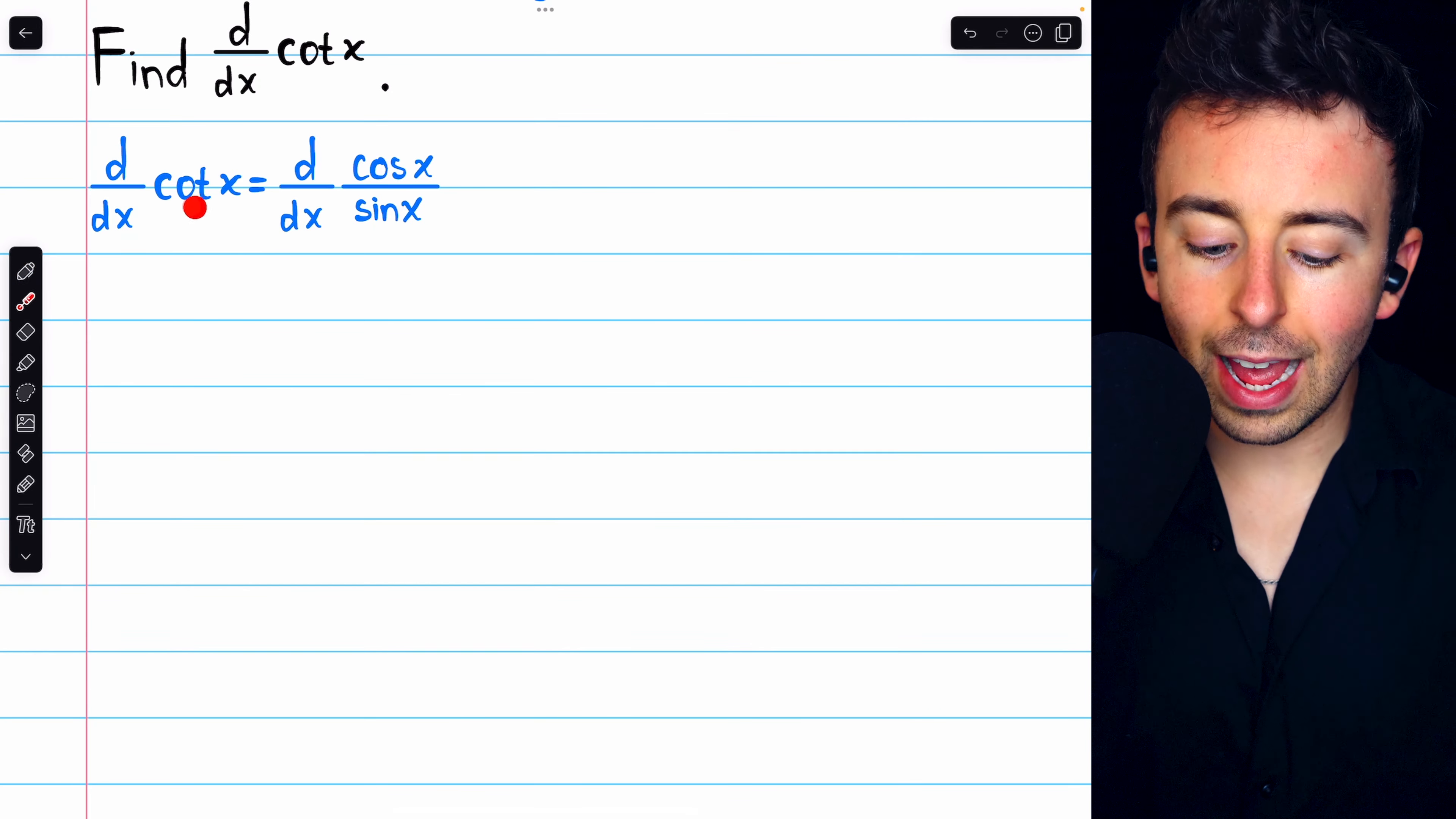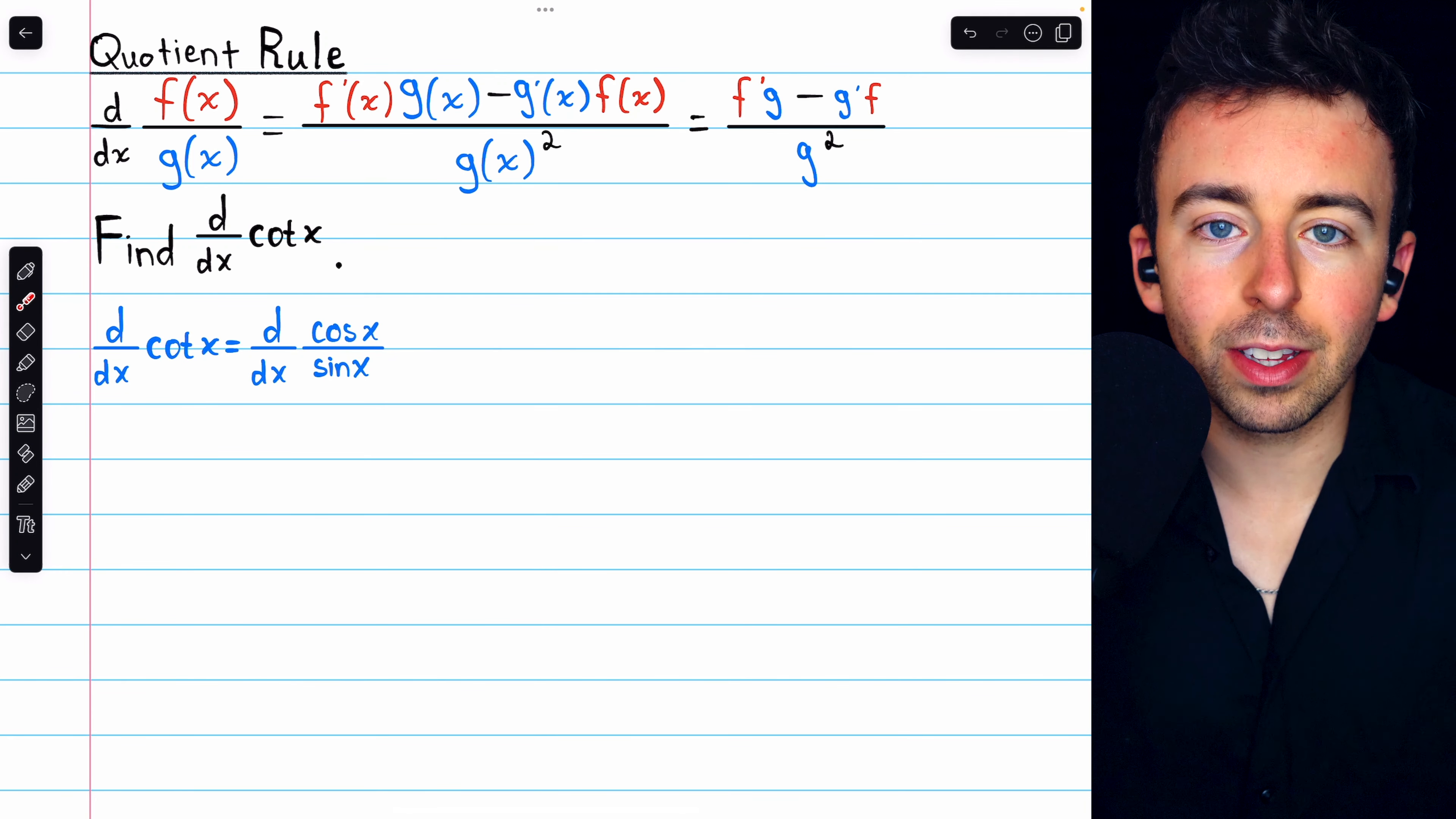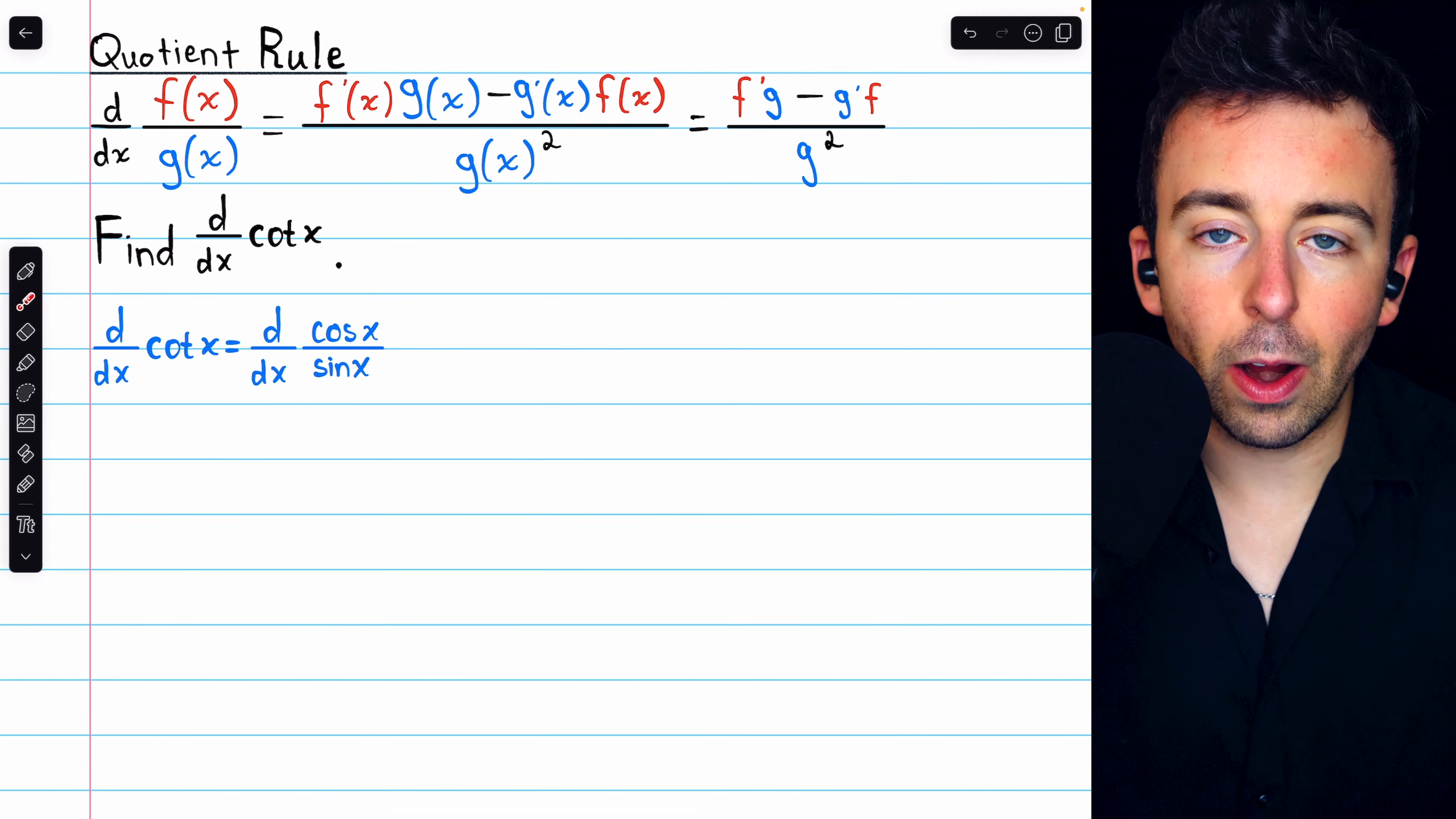So cotangent x, that's the same as cosine x over sine x. And to find its derivative, we'll use the quotient rule, which I've written here for your reference. The derivative of f divided by g is f prime g minus g prime f, all divided by g squared.